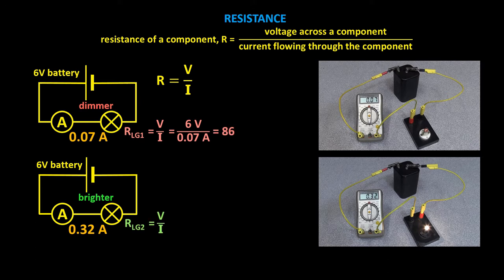The resistance of the brighter light globe equals V over I equals 6 volts divided by 0.32 amps, the current running through it, which equals only 19. The dimmer light globe has a higher resistance, which means that it resists the flow of electric current more than the brighter light globe does.